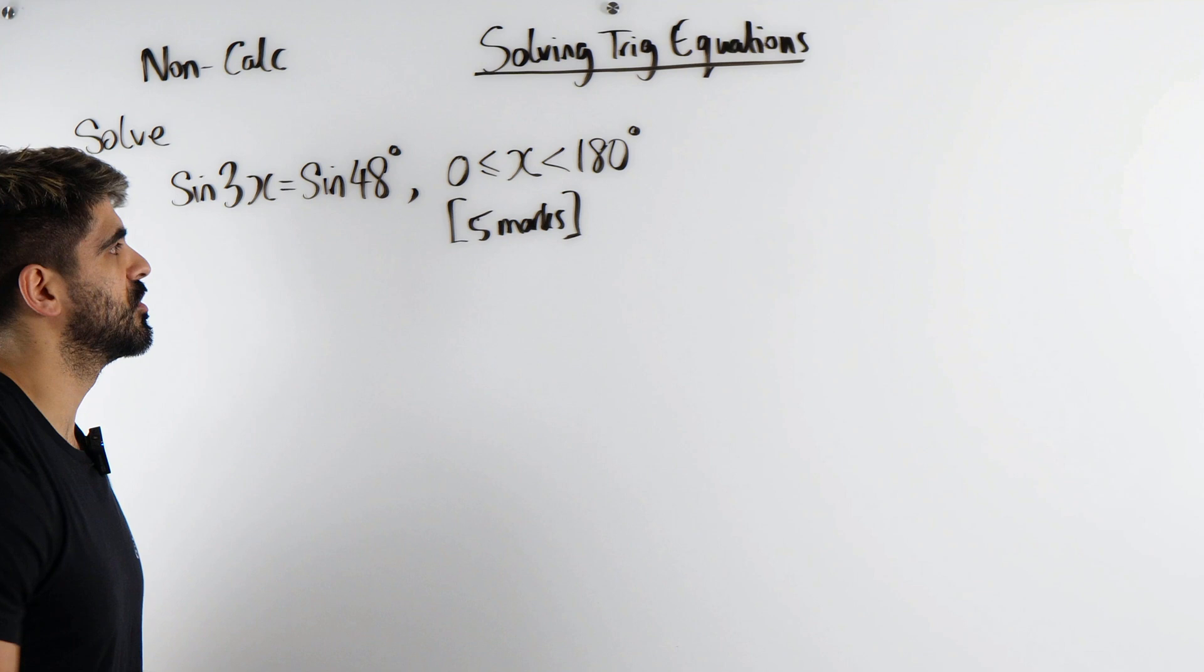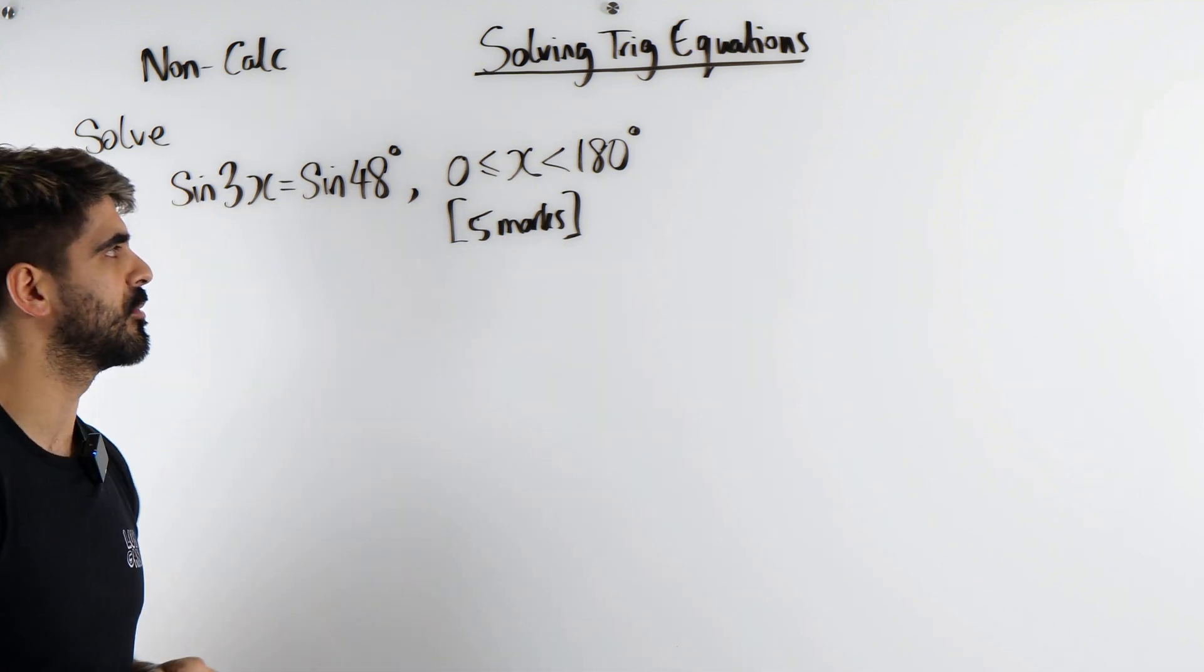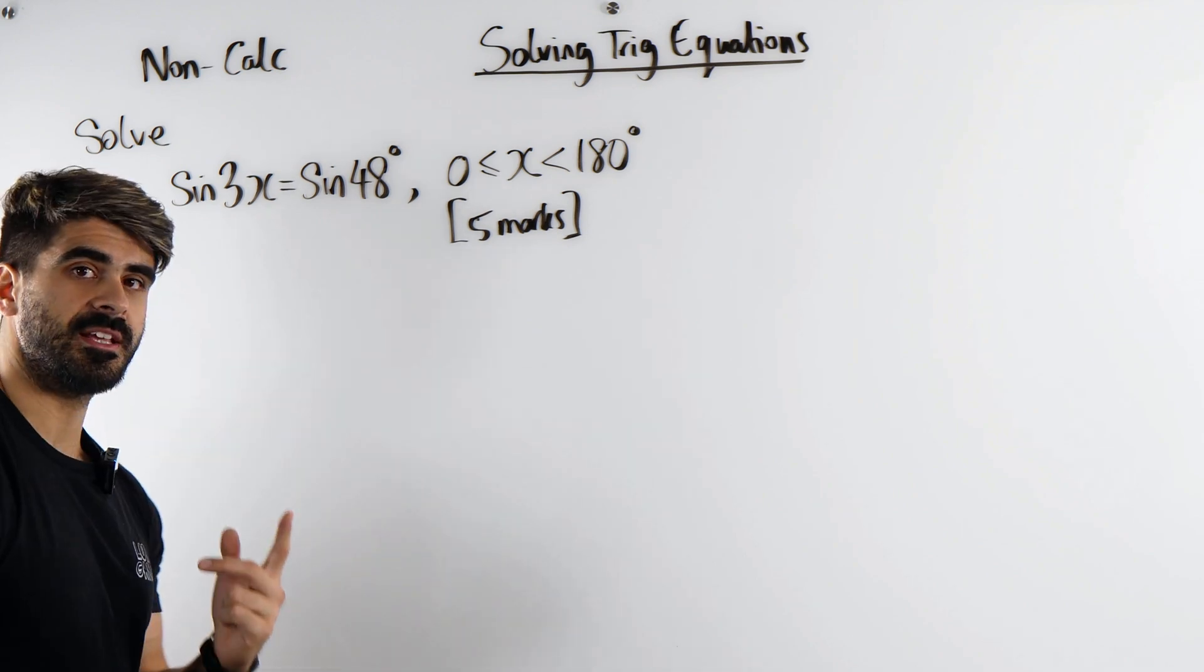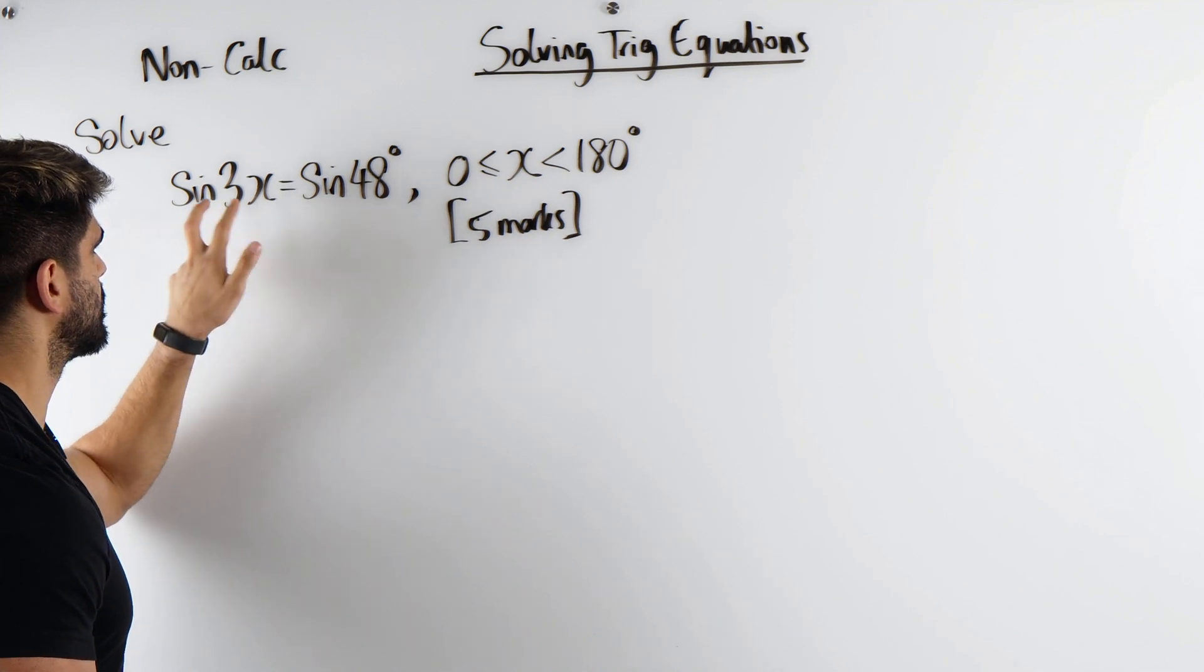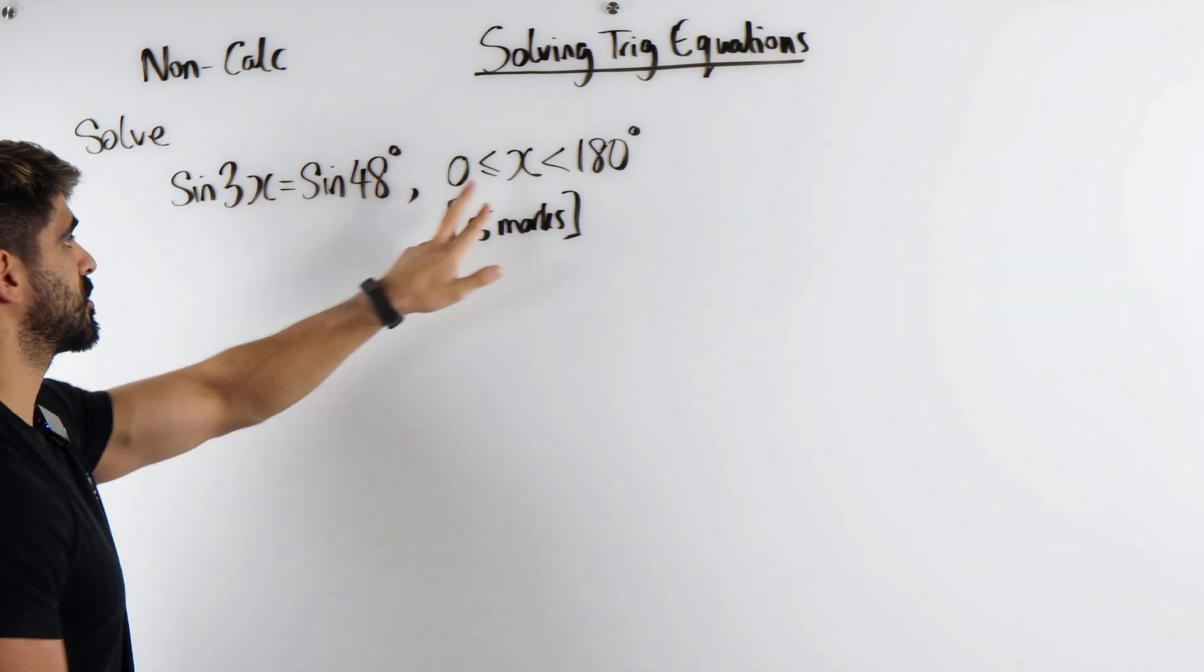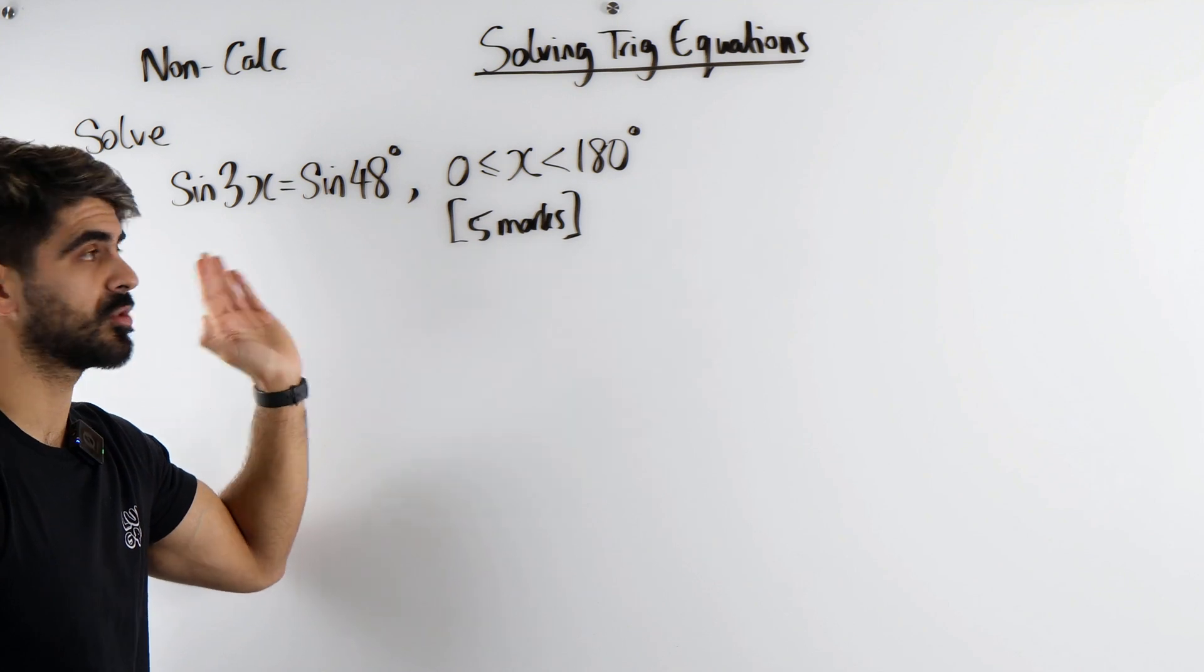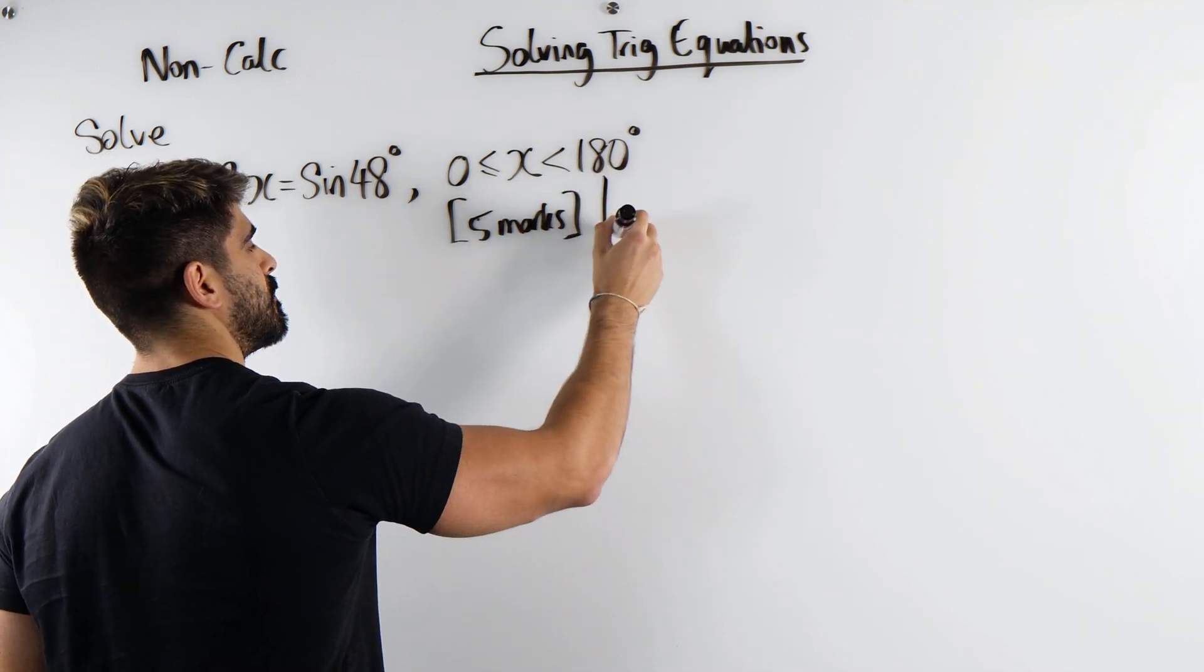One mistake that students make is they cross off the sines and divide by 3. It's not how we should be doing it. The first thing you always need to observe is the angle and see, does that match with the range? The answer is no. This range needs to be the same as the angle in the question. So we're going to times everything here by 3.